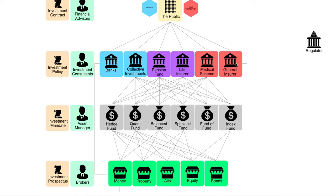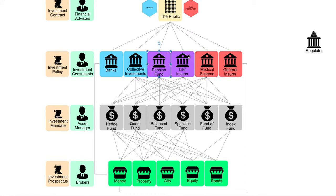Interesting things to point out: your general insurers and your banks, because they're quite short term, they're going to be putting a lot of their money directly into the money market. Whereas other institutional investors who have more long-term liabilities are going to invest in longer-term assets such as bonds, equities, and properties.